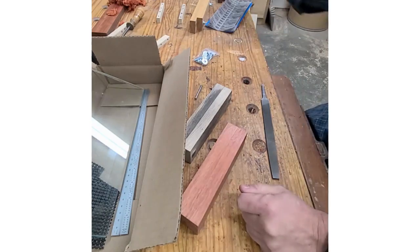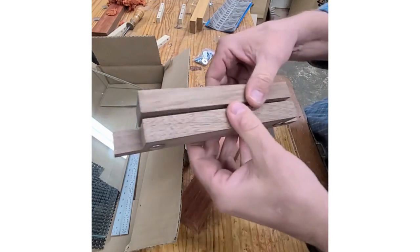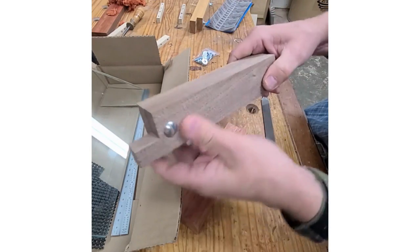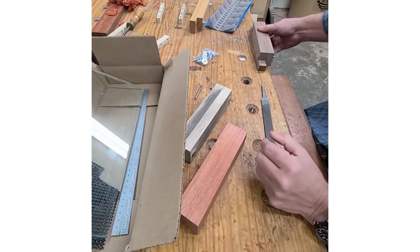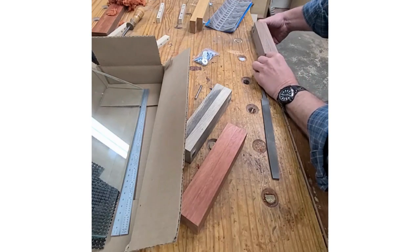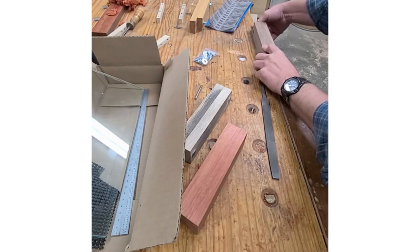Now if you don't have a vise, you can actually make a scraper vise so you can clamp it to the edge of your table. I have a couple of tabs on here and I can place this on my bench and use a couple of F-clamps and hold it down and it works great.